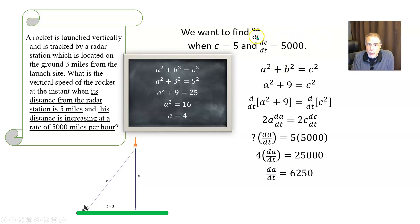So that's our answer. That's what we were trying to find. da/dt, the vertical speed of the rocket, how fast a here was changing, and we found it. The speed is 6,250 miles per hour.